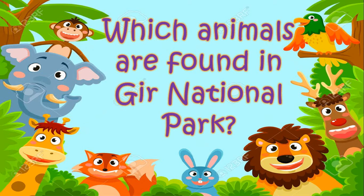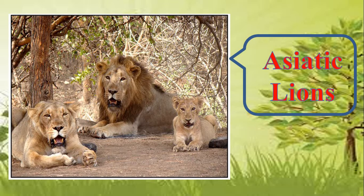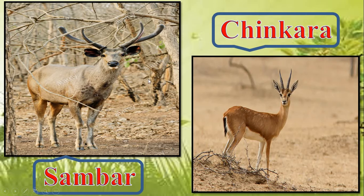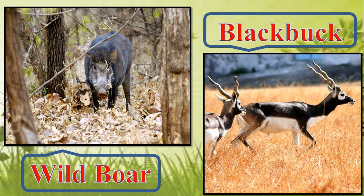Now let's see which animals are found in Gir National Park. Gir National Park is famous for its Asiatic Lion. There are also Chital, Nilgai, Sambar, Jinkara — which is also one type of deer — Wild Boar, and Blackbuck.